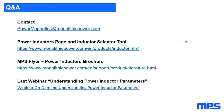Now it's time for questions and answers. MPS has an inductor product page at monolithicpower.com with an inductor selector tool that helps you select inductance value and current level for buck, boost, synchronous, or non-synchronous converter types.